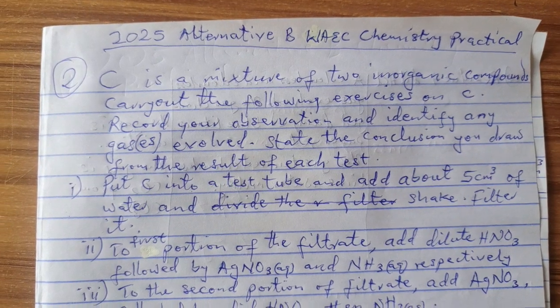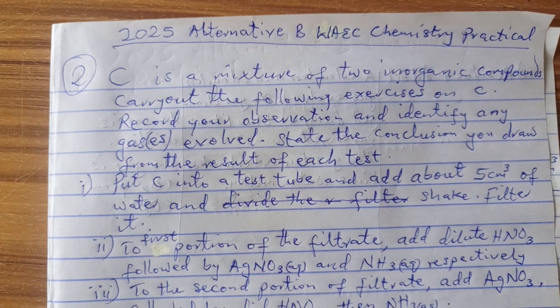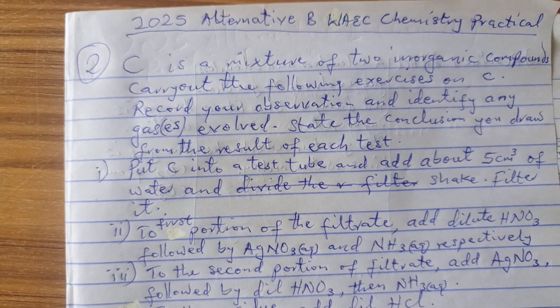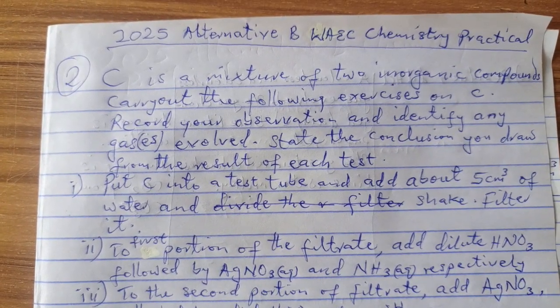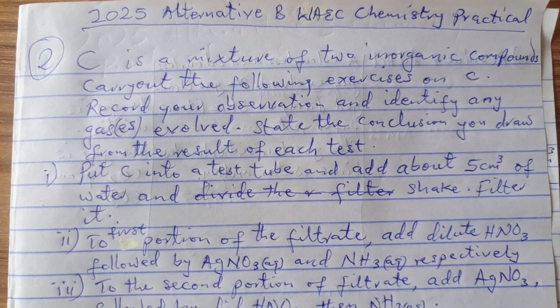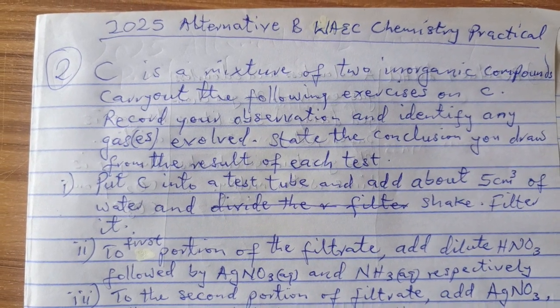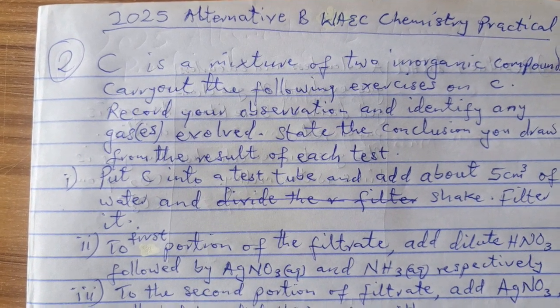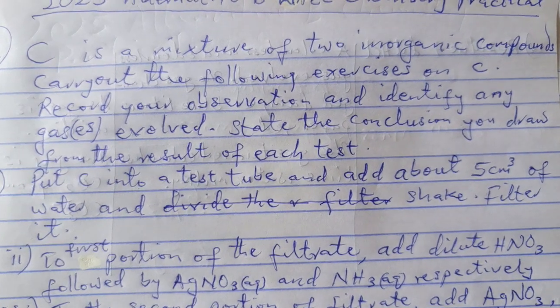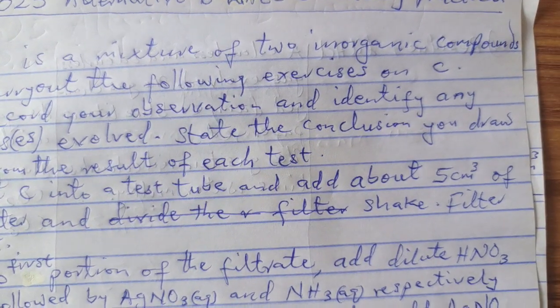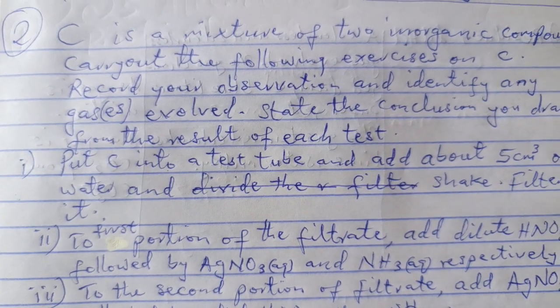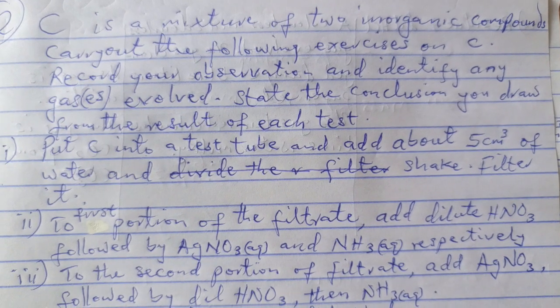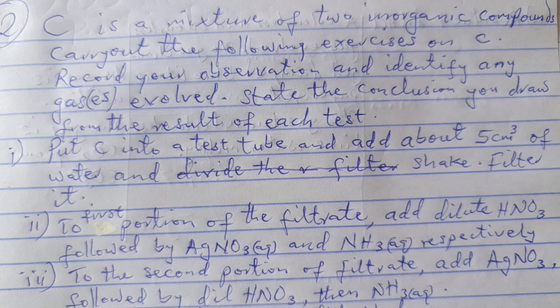The question 2 of this year is expected to be of mixed substances. So now the question goes this way: C is a mixture of two inorganic compounds. Carry out the following exercises on C. Record your observation and identify any gas or gases evolved. State the conclusion you draw from the result of each test.